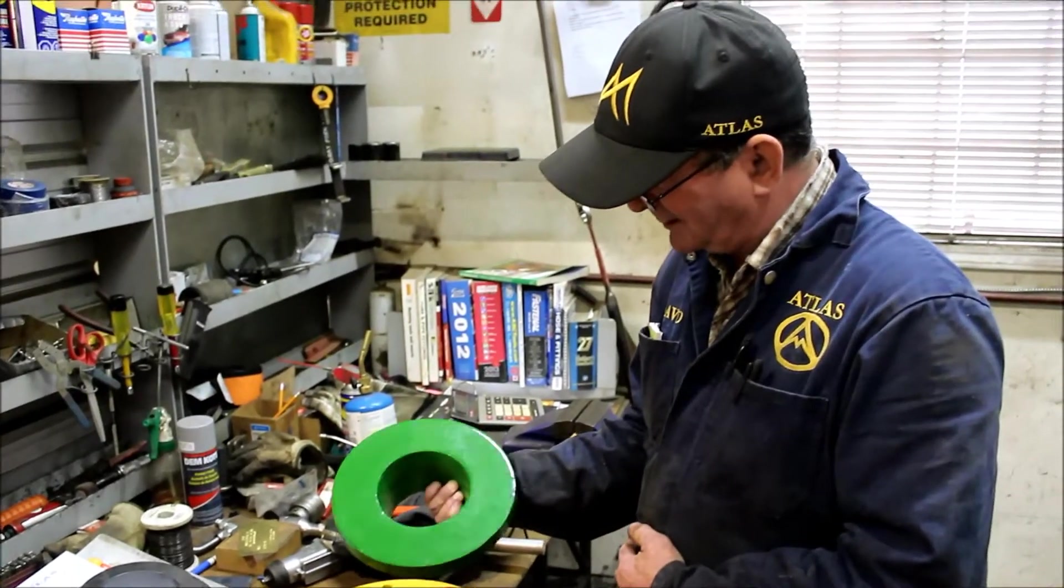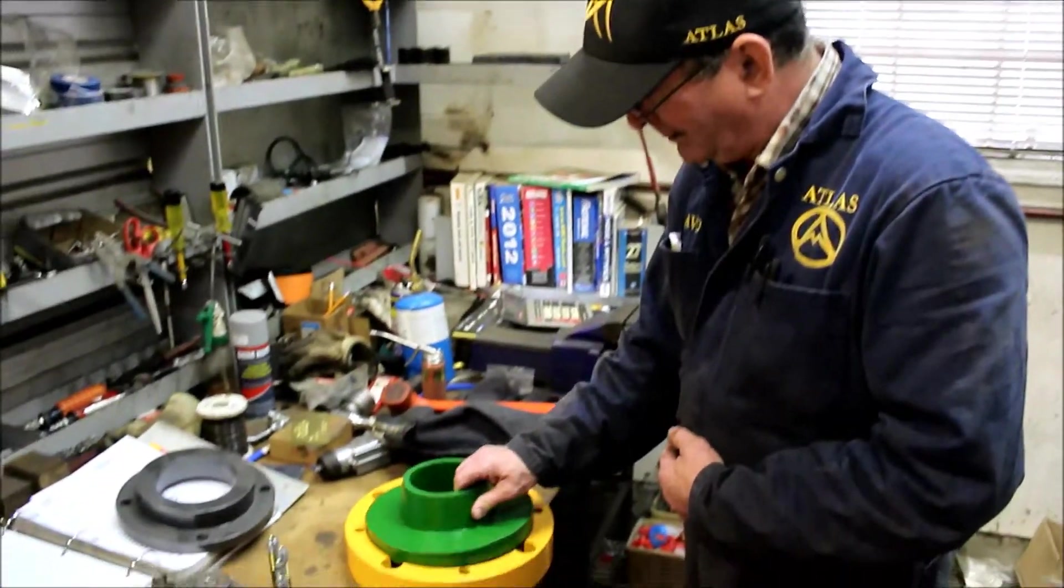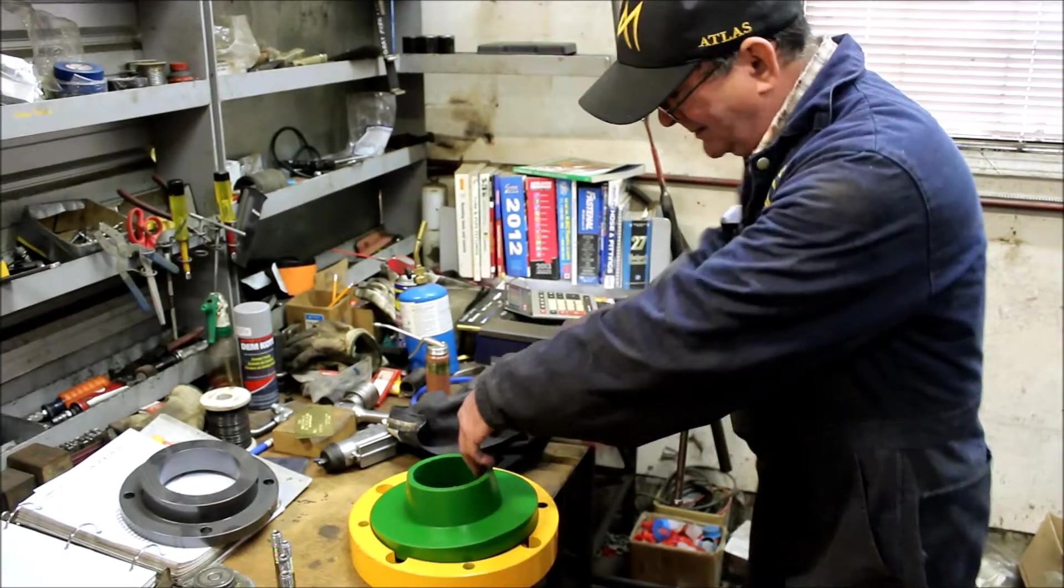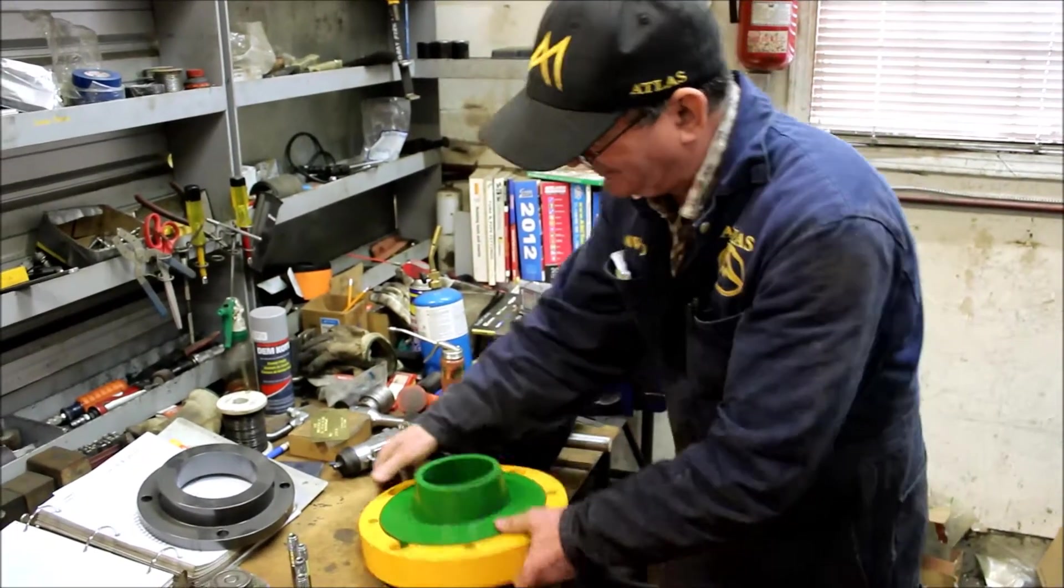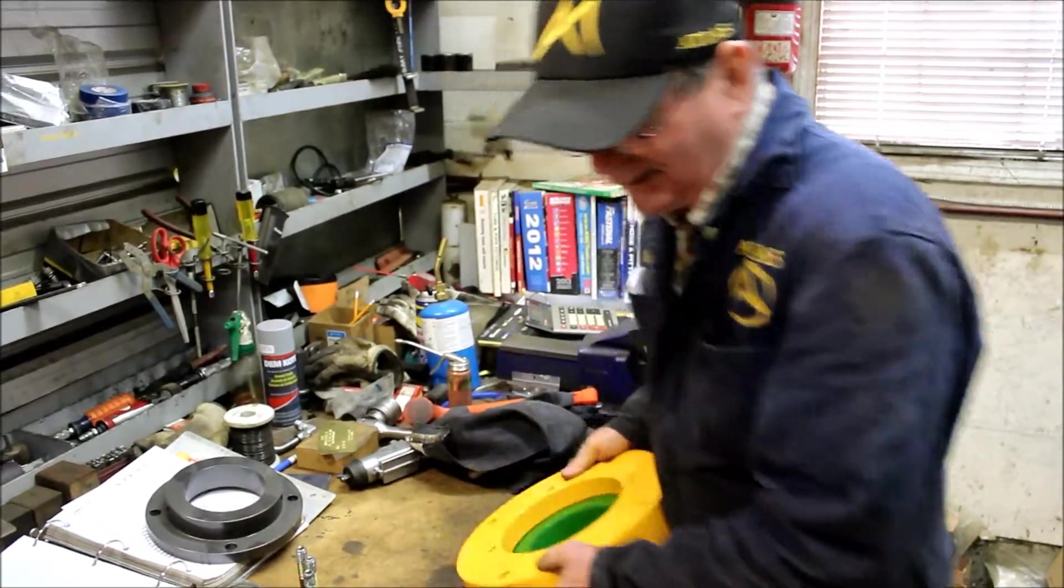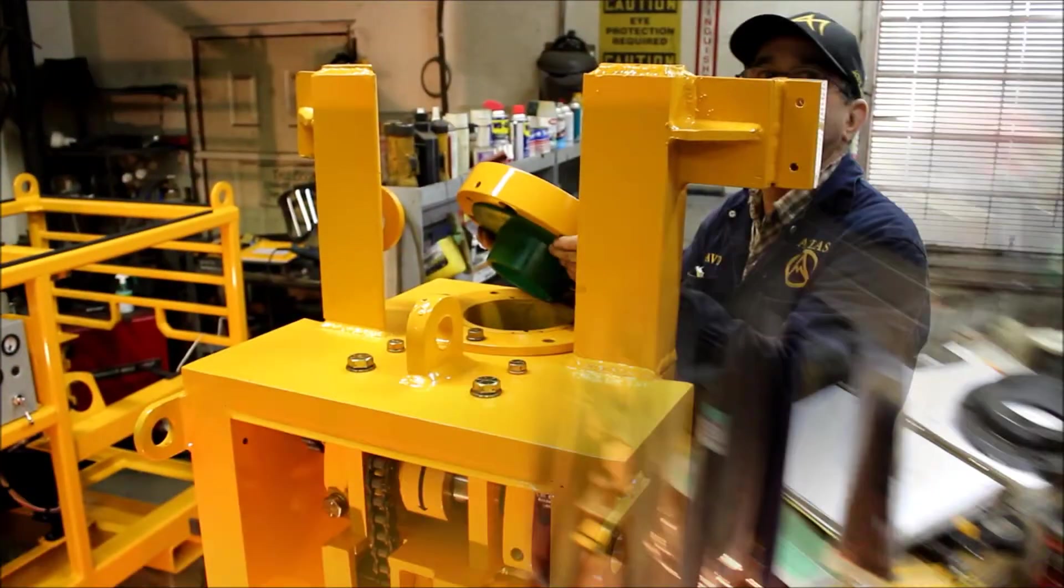Now for the top seal. This one is a 4½ inch and we put it in the top seal cover. It's just a little bit of pressure. Drops right in. We flip it over and it goes right onto the top of the hammer. Go ahead there, Dave.